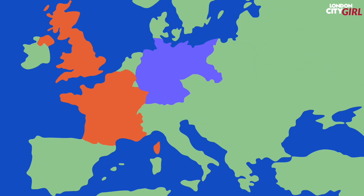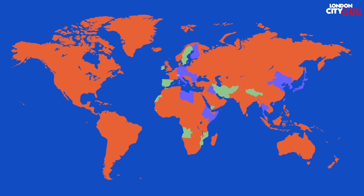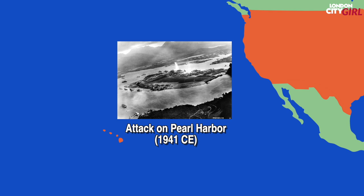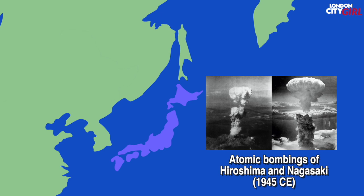Many other countries were drawn into the war and Nazi Germany was finally defeated in 1945 CE. During the final stages of World War Two, after Japan's attack on Pearl Harbor in the US state of Hawaii, the US detonated two nuclear bombs over the Japanese cities of Hiroshima and Nagasaki. These bombings remained the only use of nuclear weapons in the history of warfare so far.